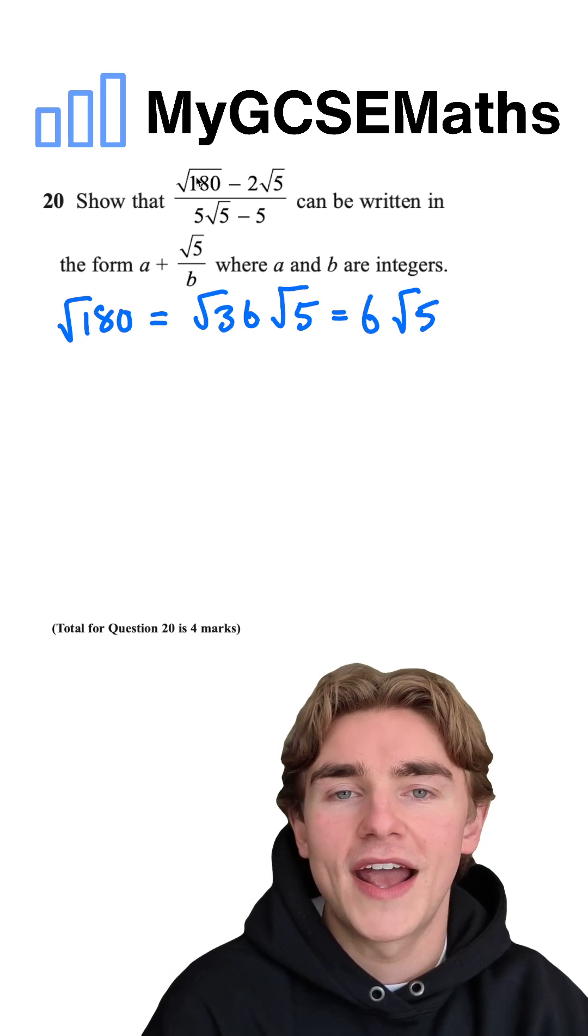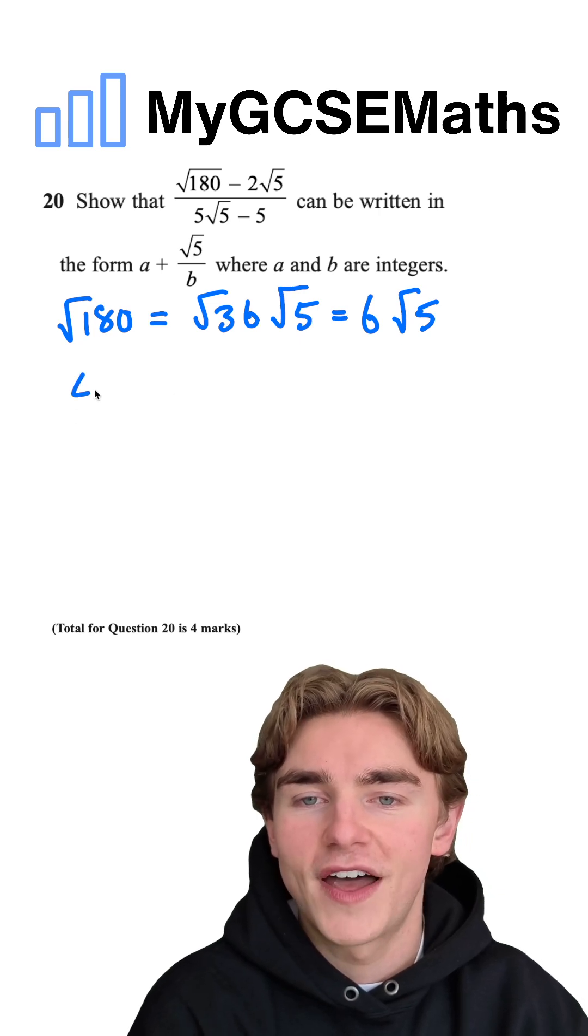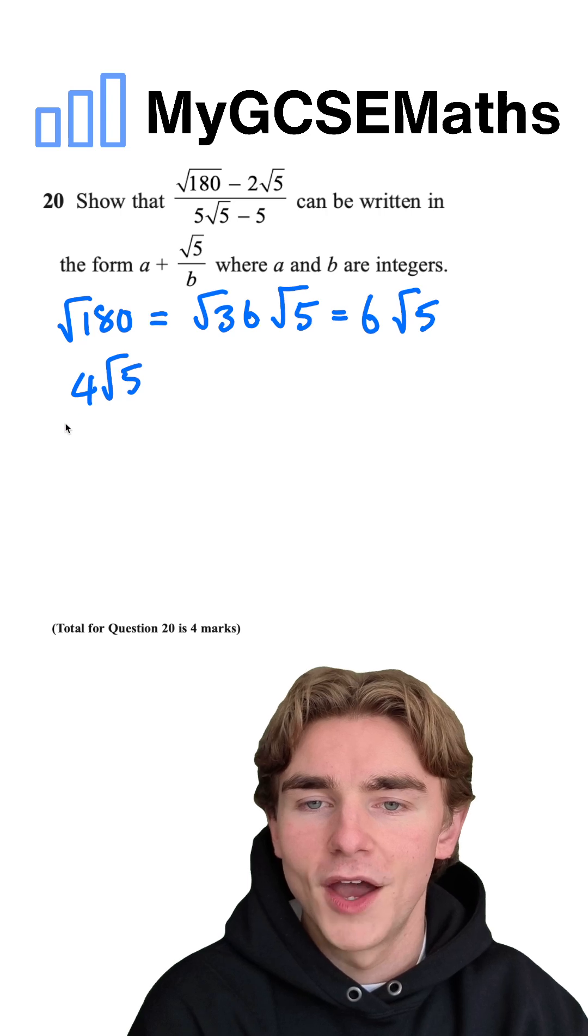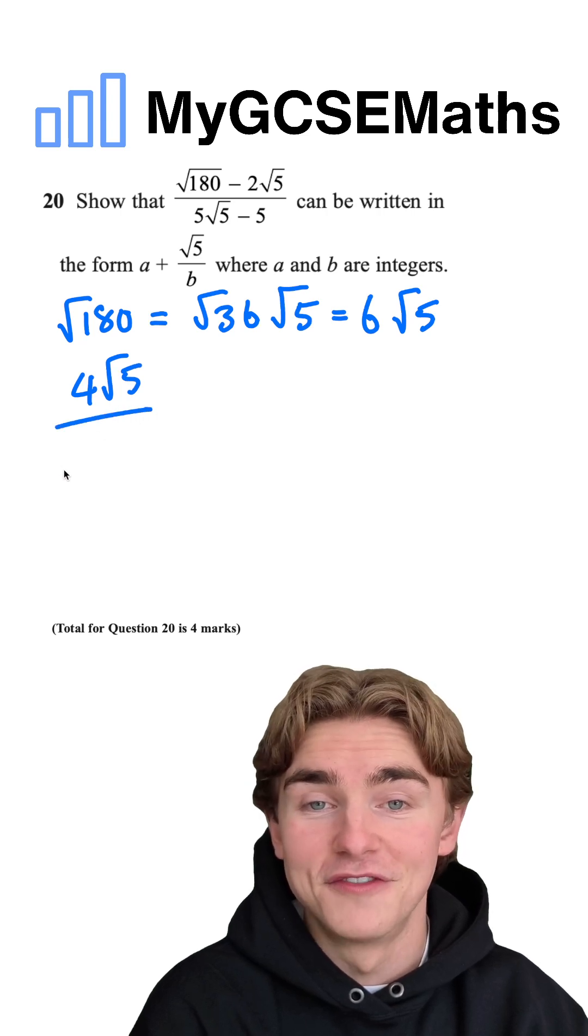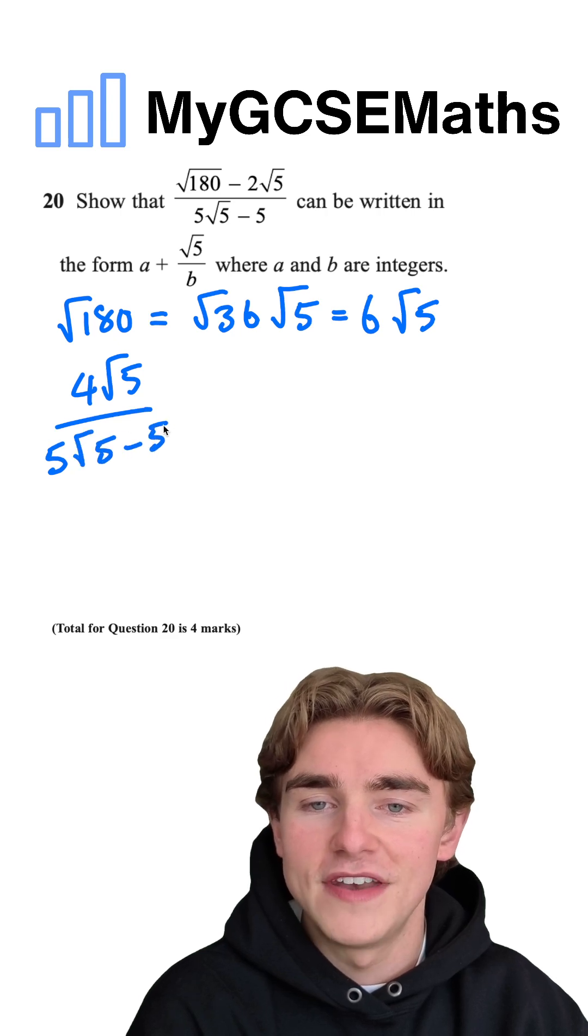So on the top, we're going to have 6 root 5 minus 2 root 5. That's going to be 4 root 5. So we're essentially simplifying 4 root 5 over 5 root 5 minus 5. Next step,